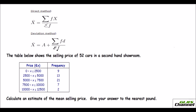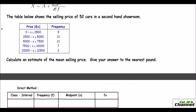I will show you how to do them by giving you an example. Here is the first question. The table shows the selling price of 52 cars in a second-hand showroom. The price ranging from 0 to 12,500 pounds is given, and the frequency — how many cars were sold — is given under the frequency column. They ask you to calculate an estimate of the mean selling price, to the nearest pound.